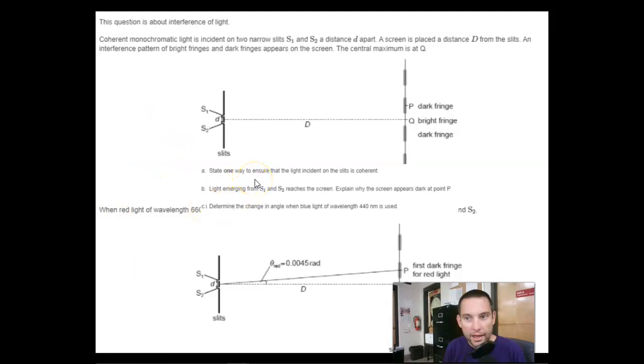State one way to ensure that light incident on the slits is coherent. Oh, there's a trick in the question. These are dark fringes. Dark fringes are shown here, not the light ones. The light ones, remember, are where constructive interference happens. The dark ones are where destructive interference happens.